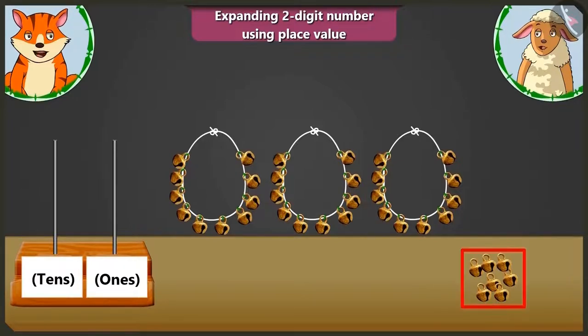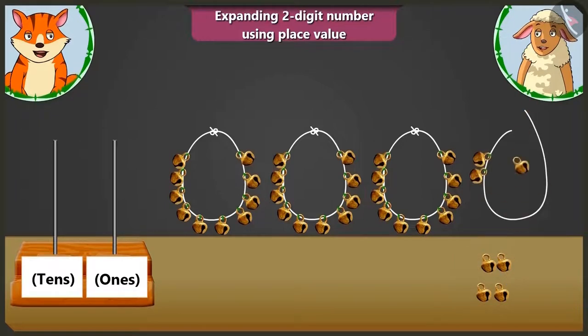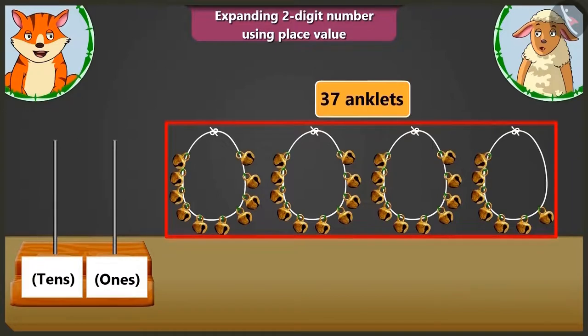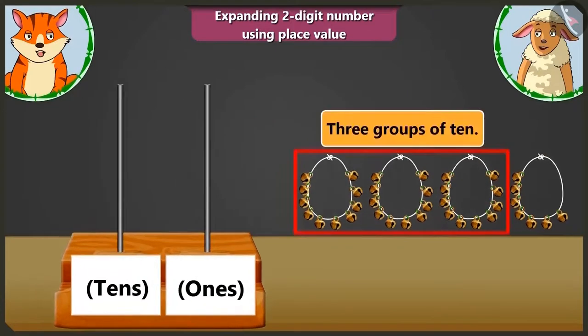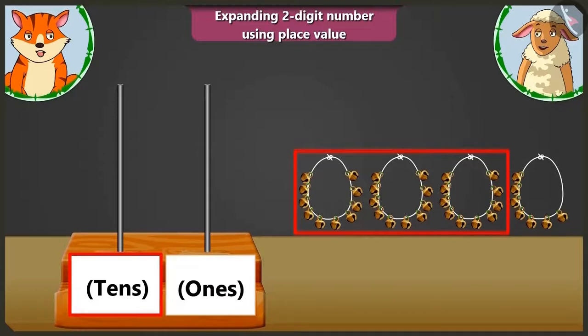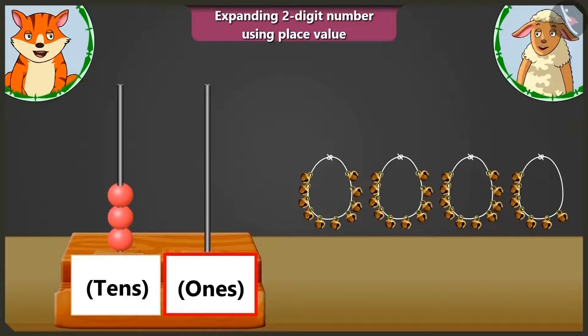Now let me count the beads we have left uncounted. One, two, three, four, five, six and seven. It means the total number of beads are thirty-seven. Here there are three groups of tens.